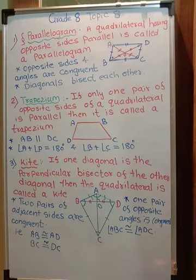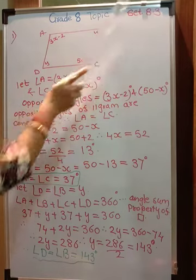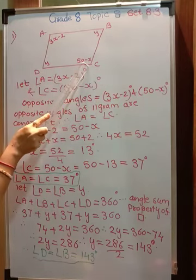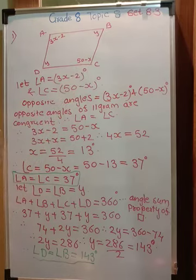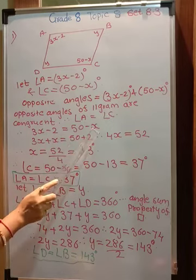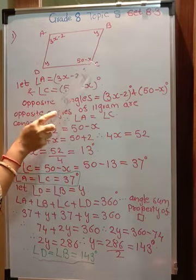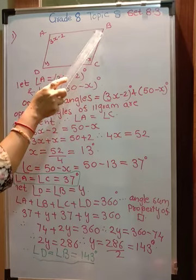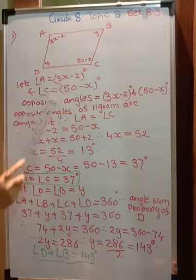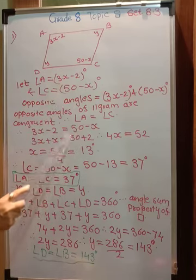Let us quickly solve the problems given in your textbook. First problem from exercise 8.3: opposite angles of a parallelogram are given as 3X minus 2 and 50 minus X, and you have to find all four angles. Using the property that opposite angles of a parallelogram are equal, we equate: 3X minus 2 equals 50 minus X. Solving: 3X plus X equals 50 plus 2, so 4X equals 52, giving X equals 13.